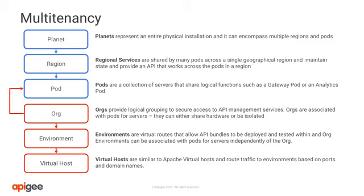Most customers create environments named Dev, QA, and so on. The relationship between organizations and environments is one to many. Each organization can contain one or more environments. Apigee Edge analytics data is partitioned by organization and environment. Virtual hosts represent the entry point to an environment. The relationship between environment and virtual host is one to many. Each environment can have one or more virtual hosts.